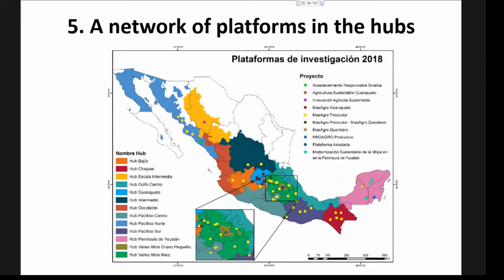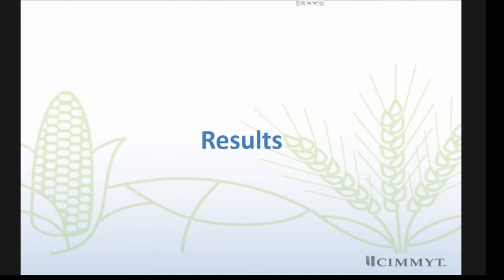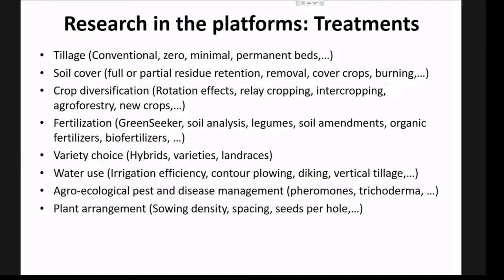That was the theory on what research platforms are and how we implement them. Now, what results have we observed so far? The things we've been researching are very diverse — they depend on what farmers and local technicians indicate as problems and what is applicable locally. We do research on tillage, soil cover, crop diversification, fertilization, varieties, water use, agroecological management, and plant arrangement.